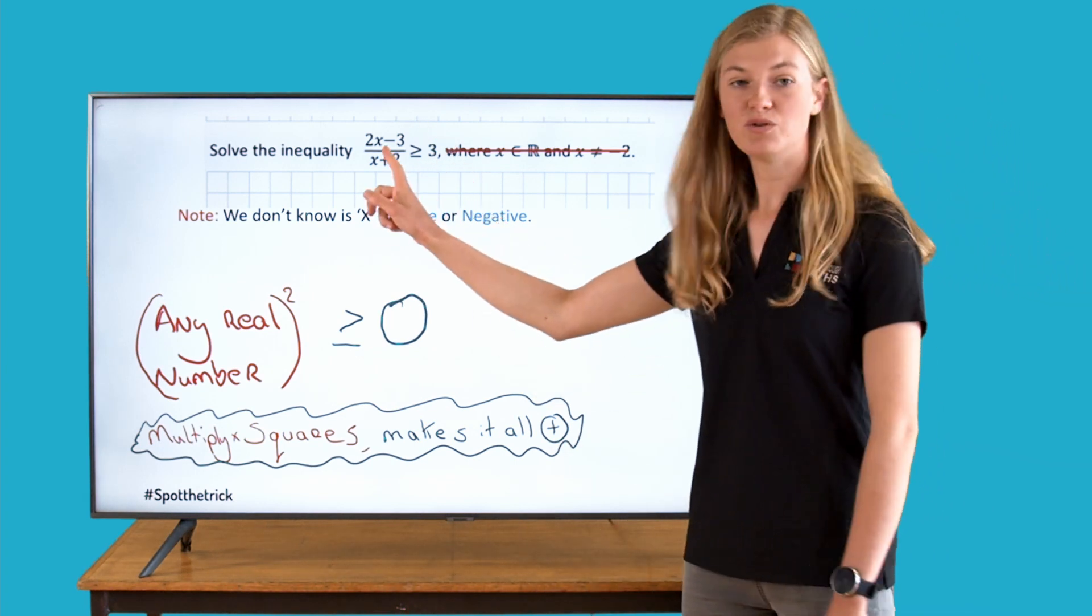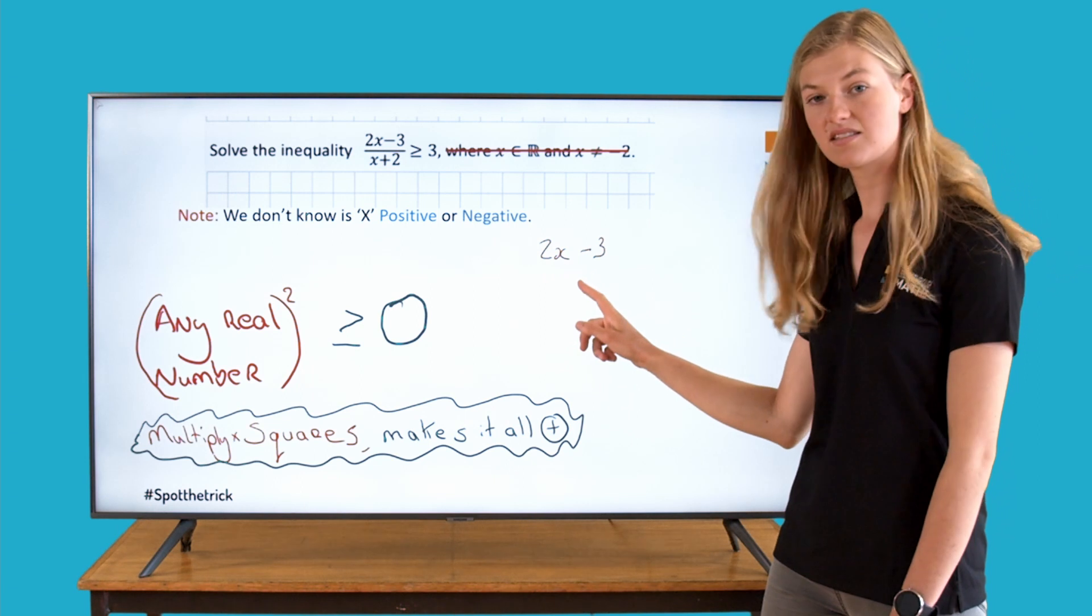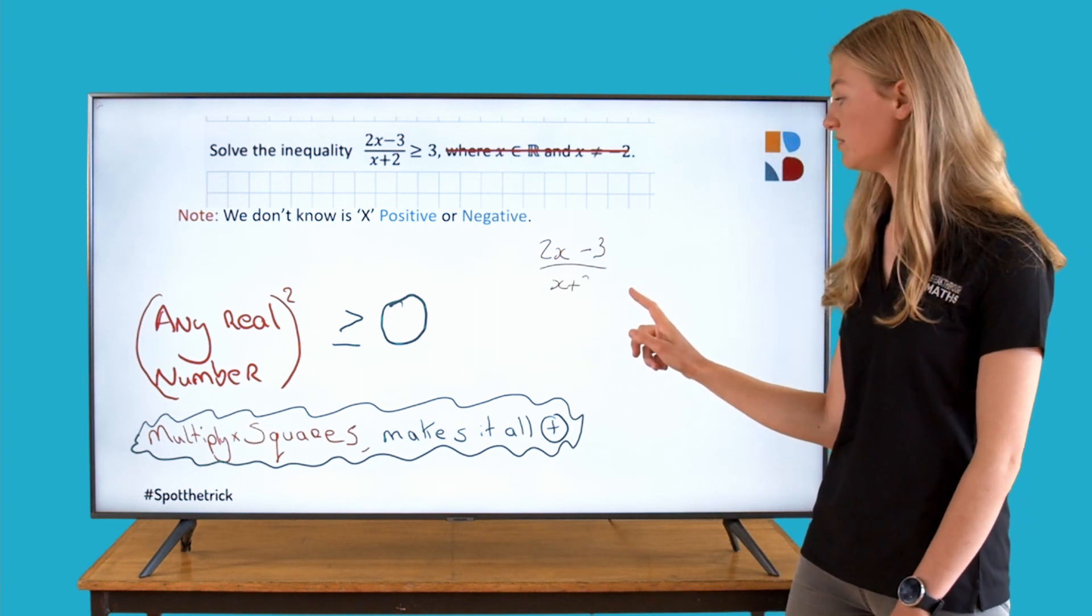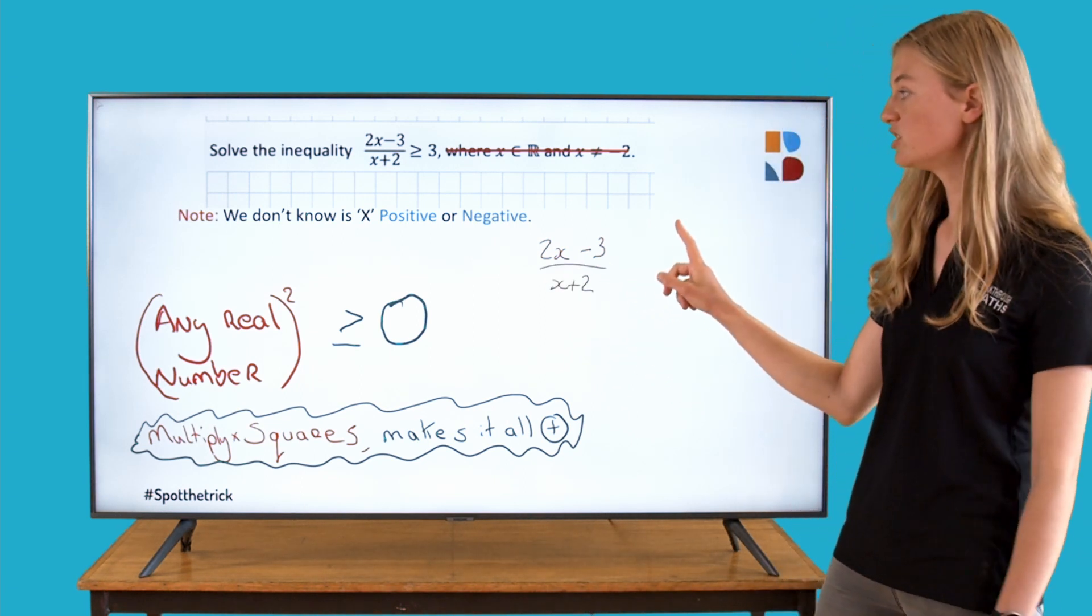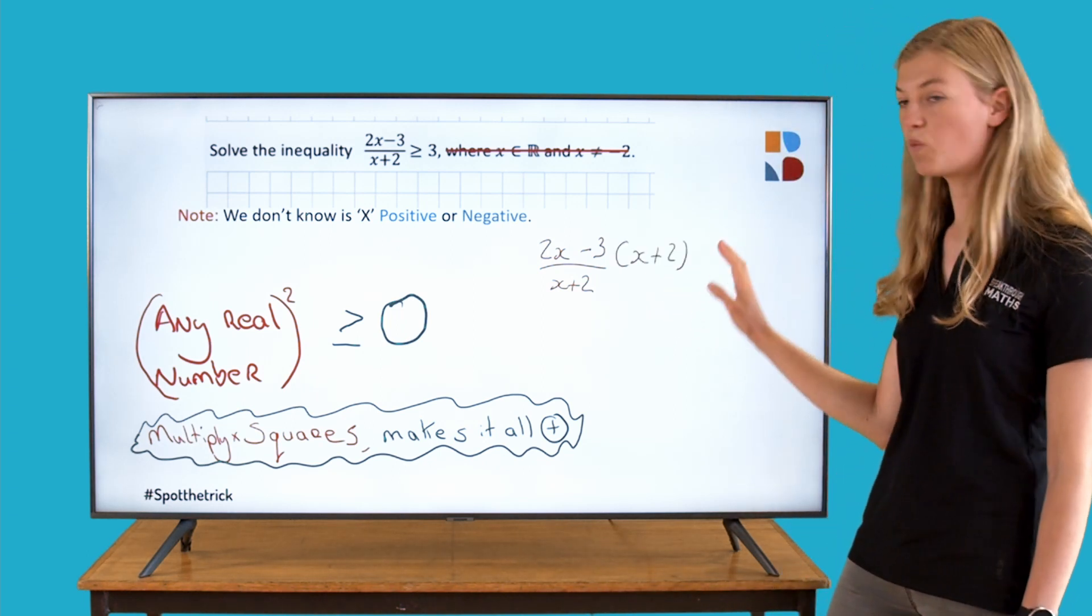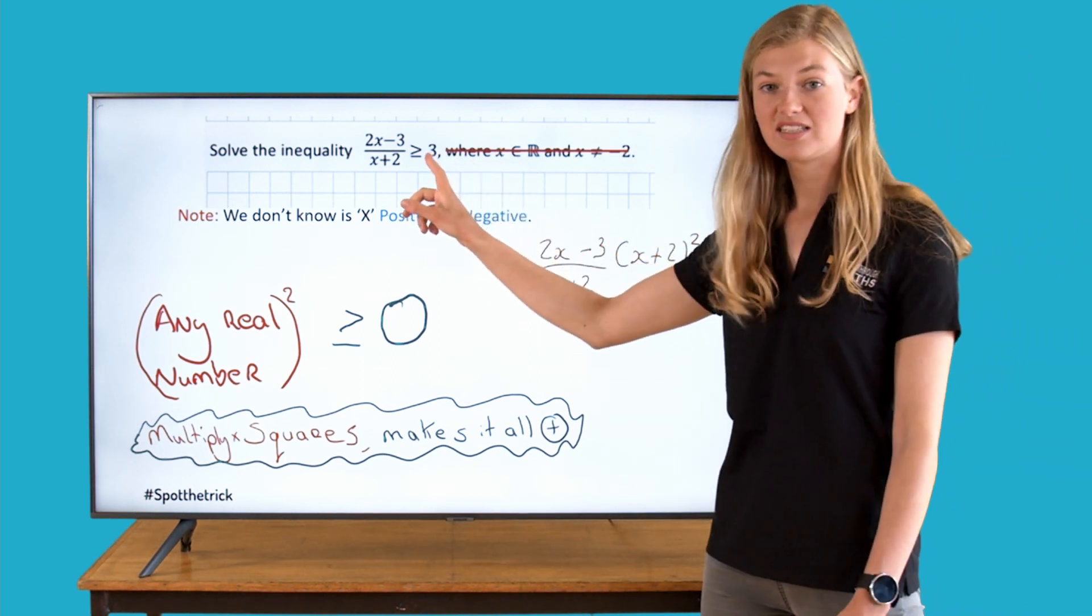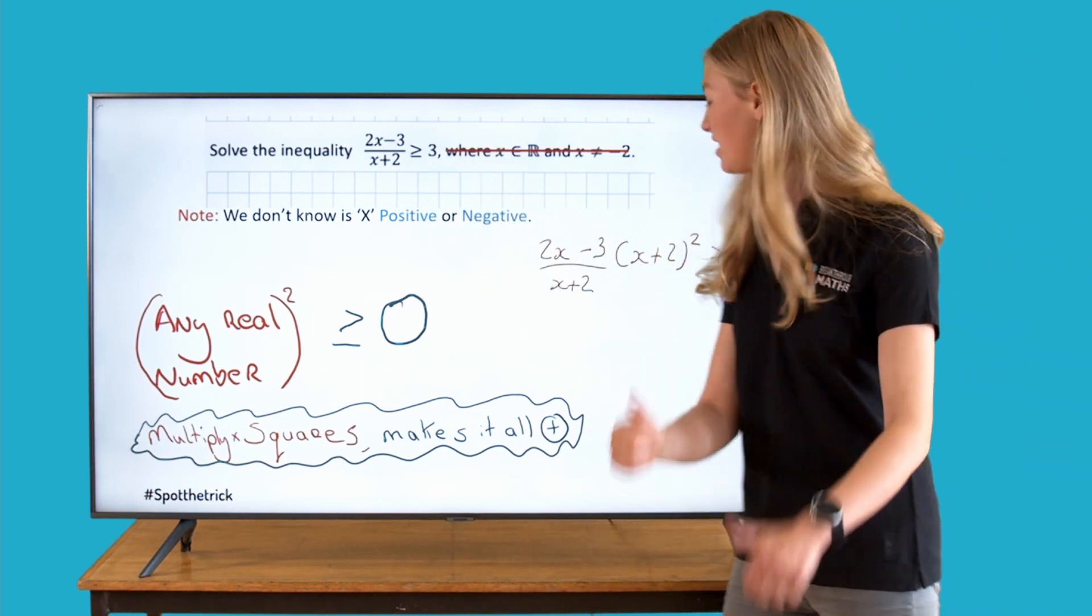So we're going to have 2x minus 3 all over x plus 2. This side multiplied by x plus 2, and square that because remember we need to keep it positive. Right, our inequality sign is going to stay the same, we're happy with that.